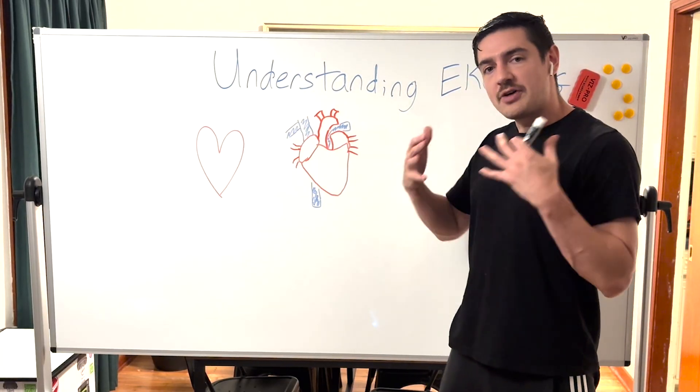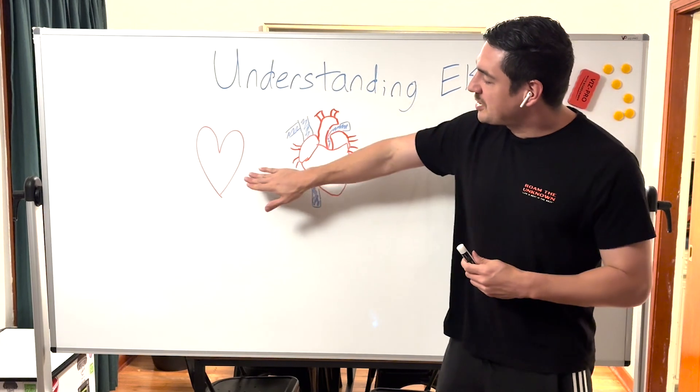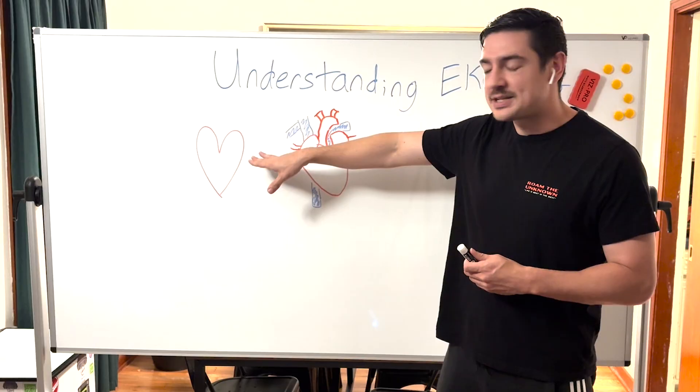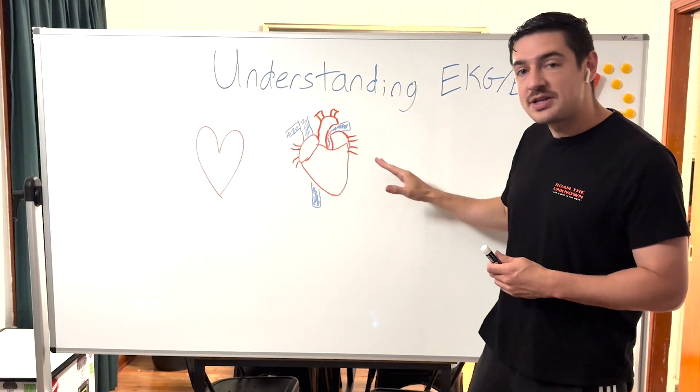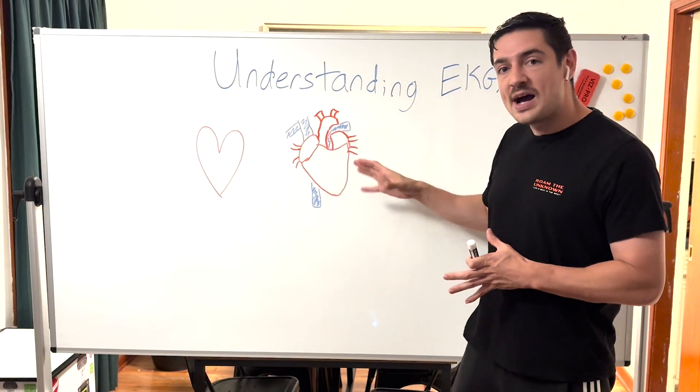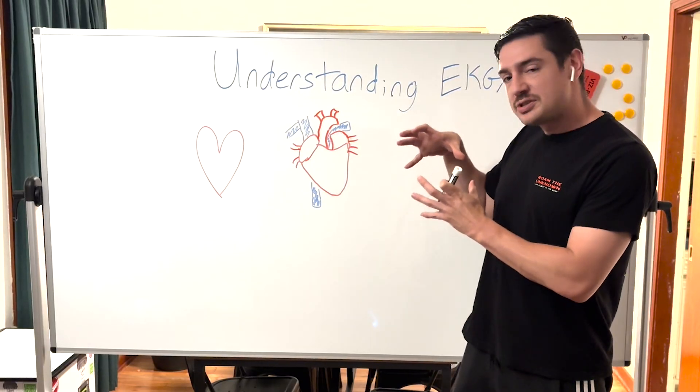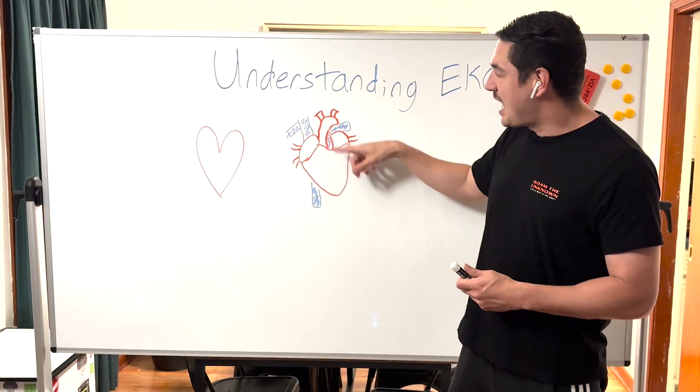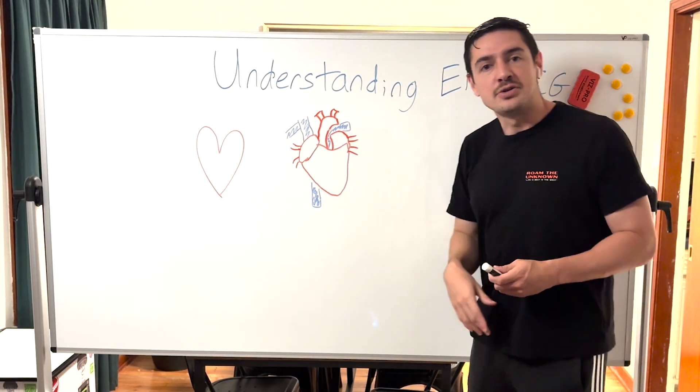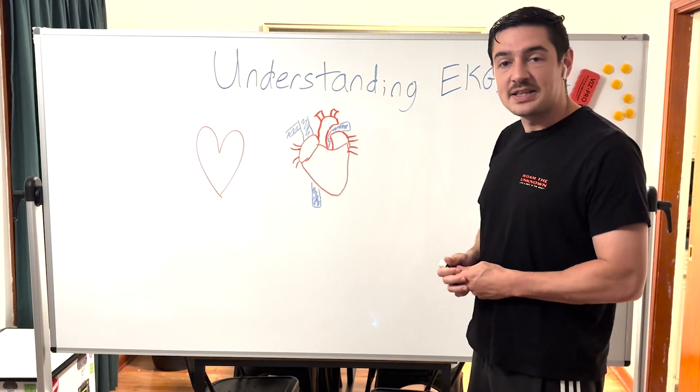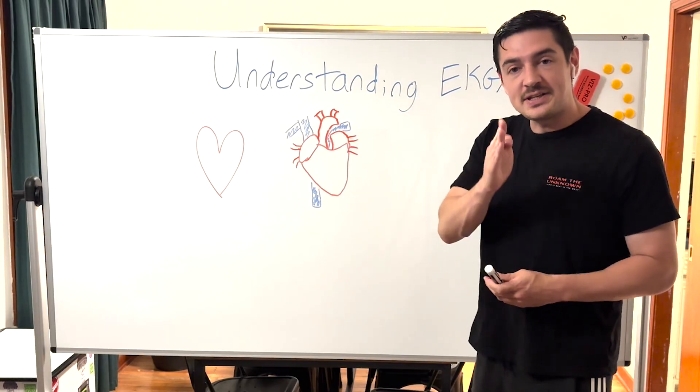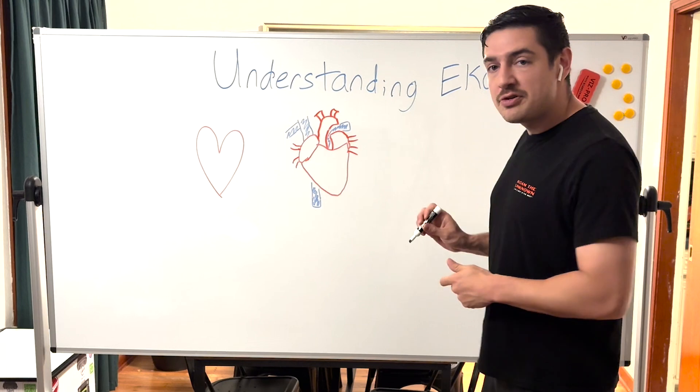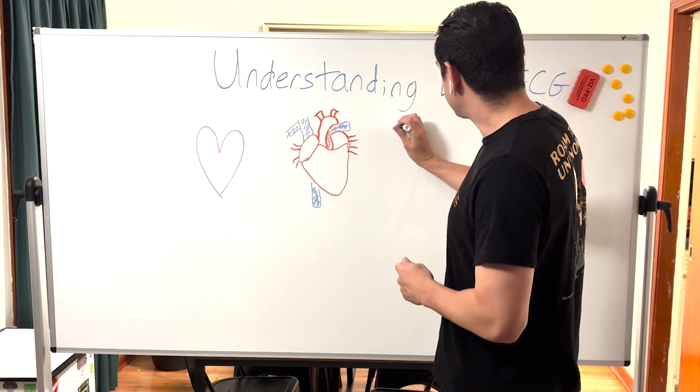To start off with the basics, some people think of the heart as this classic little cartoon heart. Some people think more cardiac-wise, like this big sack of meat where you have your atriums, your ventricles, your aorta, your inferior and superior vena cava. But for the sake of EKG rhythms, I'd highly recommend that you think of the heart as a box.